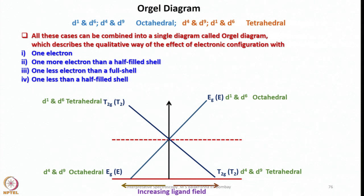All these cases can be combined into a single diagram called the Orgel diagram, which describes qualitatively the effect of electronic configuration — with one electron, one more electron than half filled subshell, one less electron than a full shell, and one less than half filled shell. That covers all electronic configurations: D¹, D⁶, D⁴, D⁹.